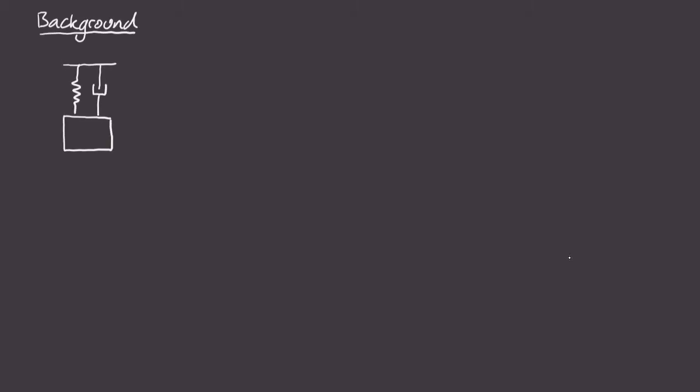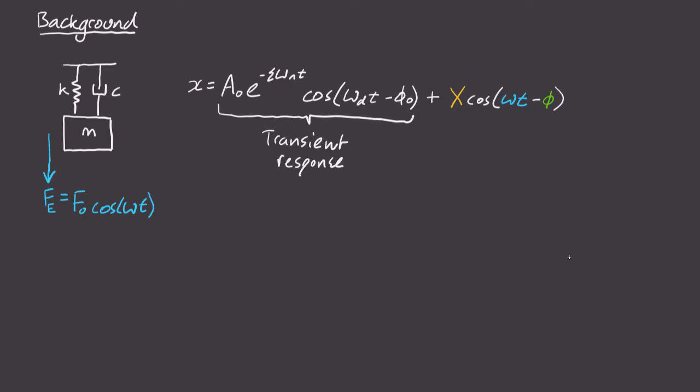Let's say we have a spring mass damper system that's being excited by a force F0 cosine omega t. We know the equation of motion for this system is given by this. This term is the transient response, and this term is the steady state response.